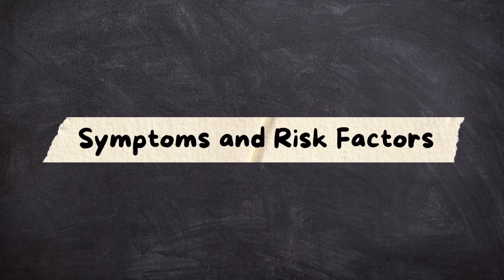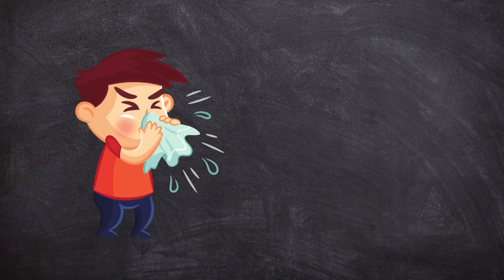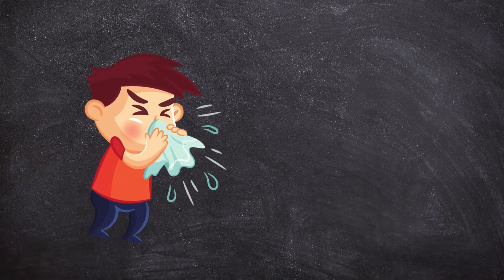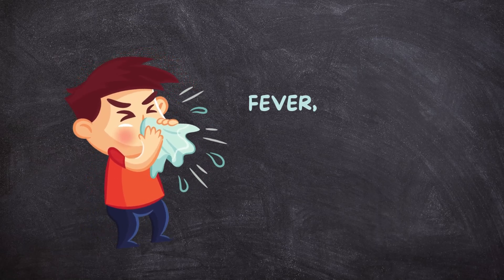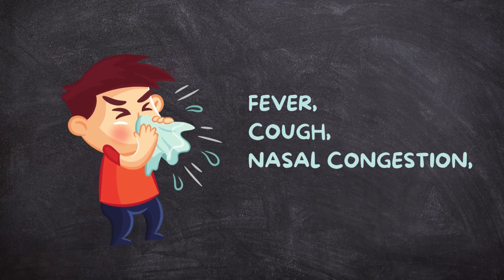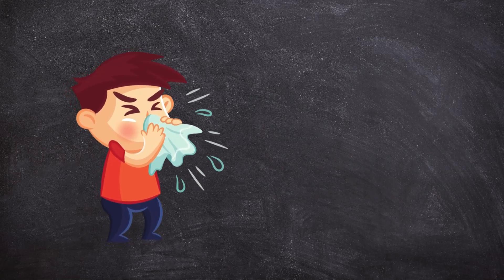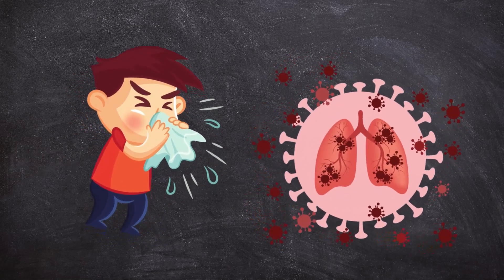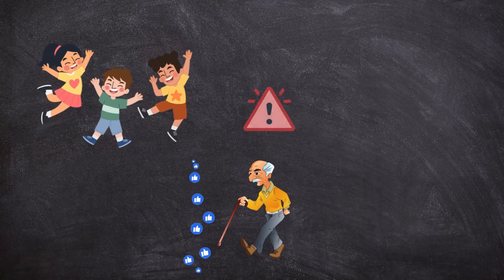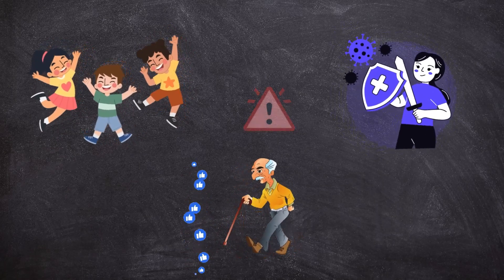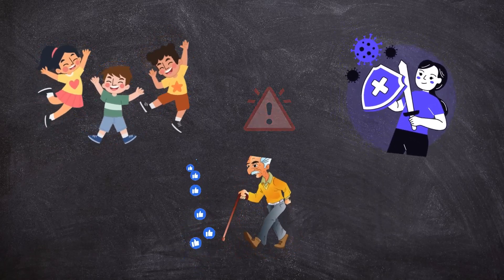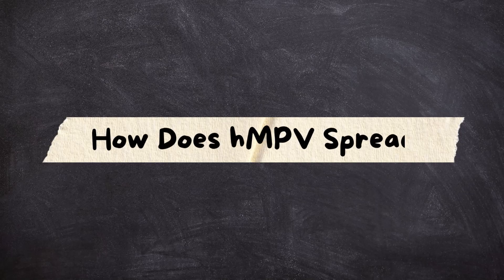Symptoms and risk factors: HMPV infections often resemble the flu or RSV, with symptoms including fever, cough, nasal congestion, and sore throat. In severe cases, it can cause bronchiolitis or pneumonia. Young children, individuals over 65, and those with weakened immune systems are most at risk. How does HMPV spread?